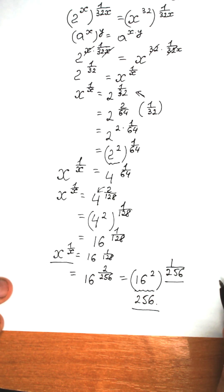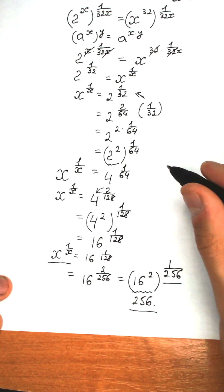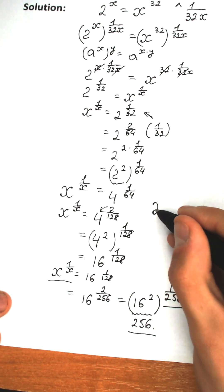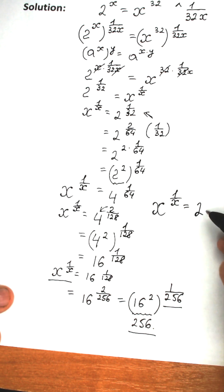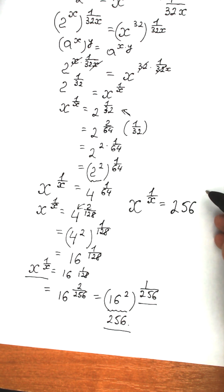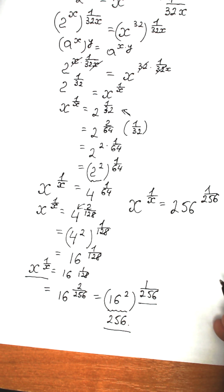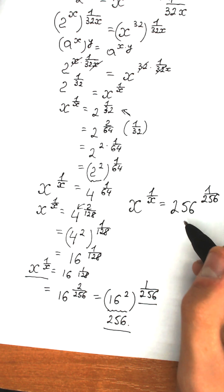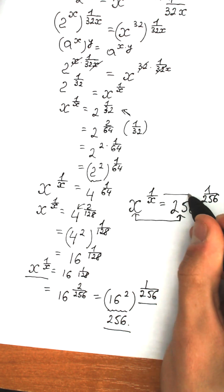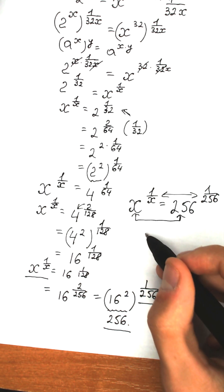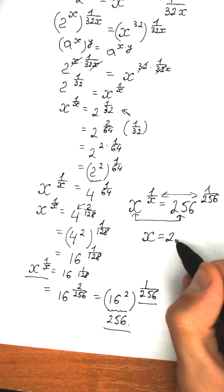So we have x to the power 1 over x equal to 256 to the power 1 over 256. Since we have the same base and the same exponent on both sides, it implies that x equals 256.